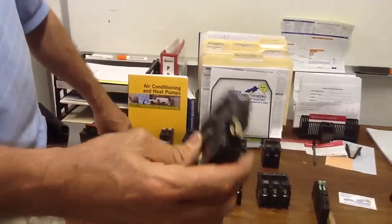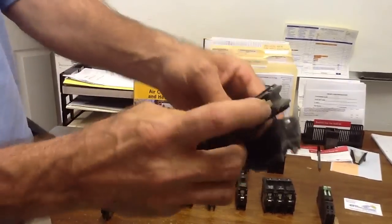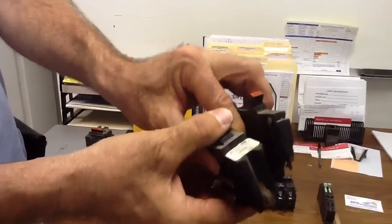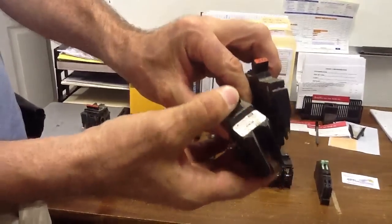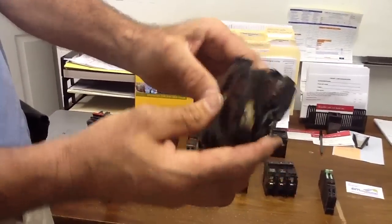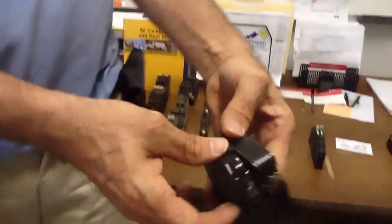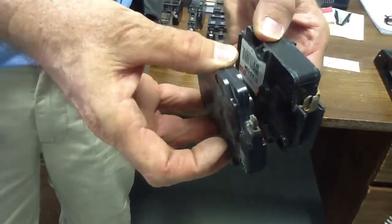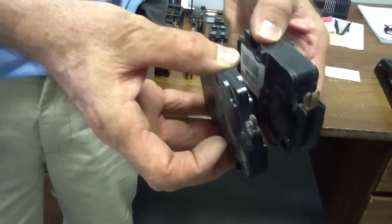Here is a fat single pole breaker, Federal Pacific, see the stab lock. This one actually sounds pretty good. I would use this one. Here's the difference, thin and fat. So that was another drawback with Federal Pacific, they have the thin and the fat.